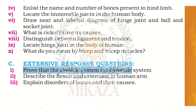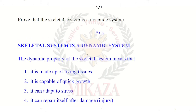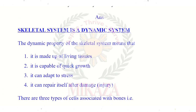The dynamic property of the skeleton system means that it is made of living tissues, it is capable of quick growth, it can adapt to stress, and it can repair itself after damage. These are the four dynamic properties.